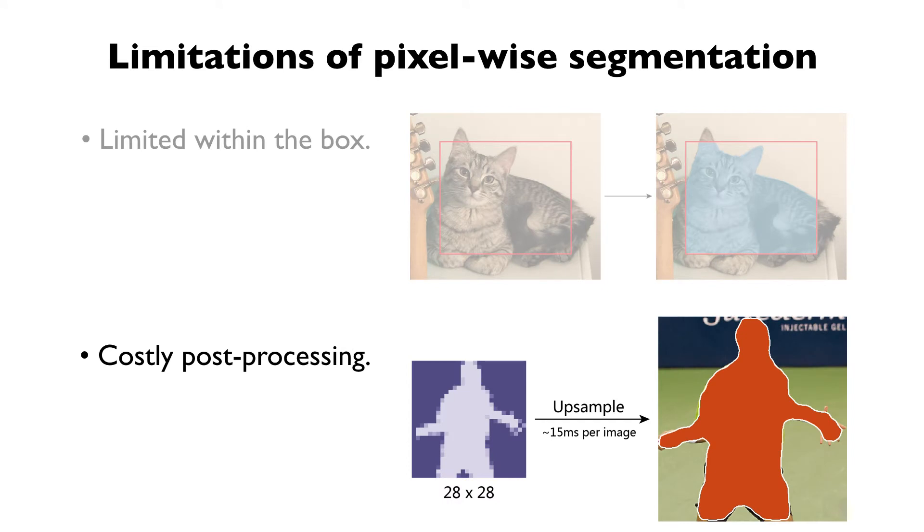Second, representing an object shape as dense binary pixels generally results in costly post-processing. The up-sampling step in Mask R-CNN takes 15 milliseconds per image.